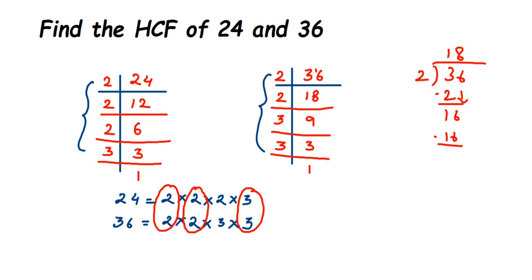Once we've got the pairs like this, we just multiply. So HCF of 24 and 36 will be - from this pair take one 2, from this pair take one 2, and from this pair take one 3. That's it. Multiply them: 2 times 2 is 4, 4 times 3 is 12. So 12 is the answer. 12 is the highest common factor.